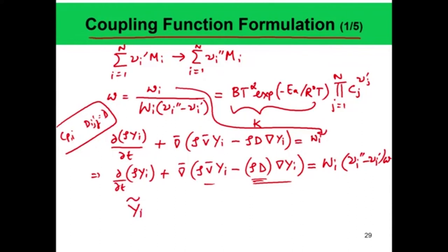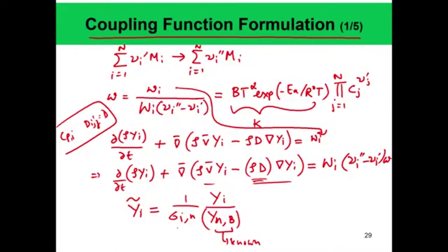Later we will see that with this non-dimensionalization the equations become very simple and the solution involves only one or two steps — the equations become much simpler to solve and more insightful. So we define yi_tilde, the non-dimensional or stoichiometrically weighted mass fraction, as (1/sigma_in) times y_i divided by y_nB, where y_nB is the species mass fraction of the nth reference species at the boundary of the domain, which is known and fixed.